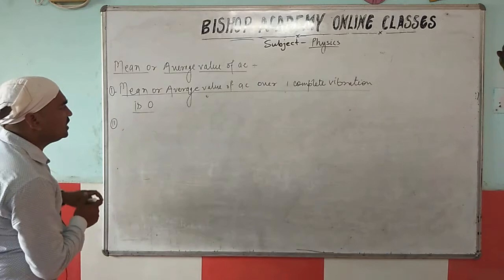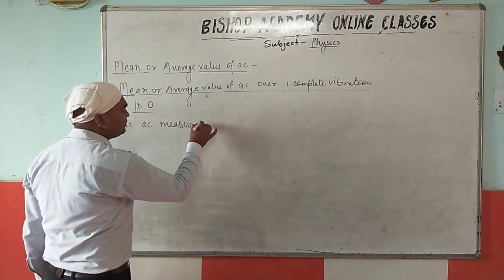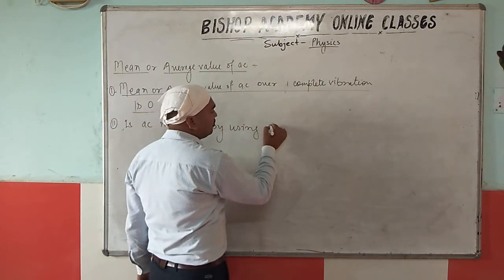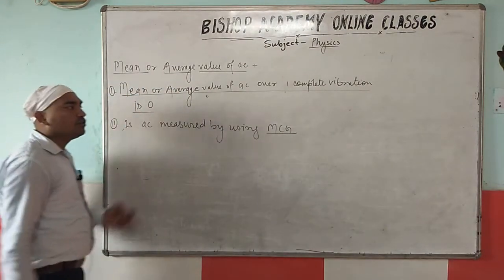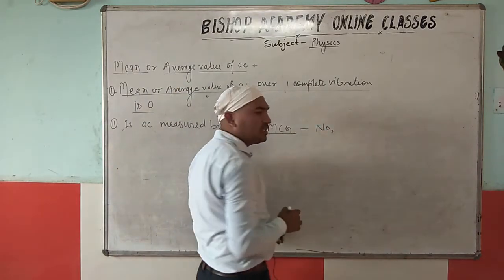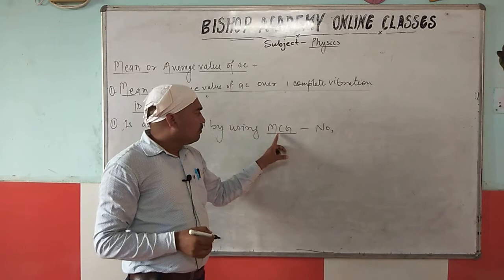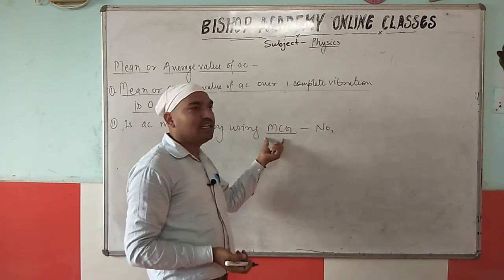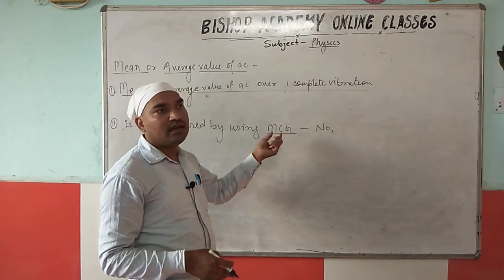The second question is: can AC be measured using a moving coil galvanometer? The answer is no. Since a moving coil galvanometer is based on the principle of magnetism — whenever current flows, a magnetic field is created, and due to that magnetic field a torque is experienced by the coil, causing it to deflect.